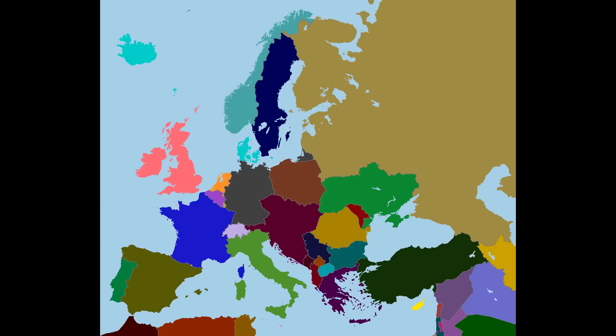Moving south to the Mediterranean: Malta belongs to the British, as does Cyprus — which is the reason they still have British military bases there today. Egypt is also British, although there's only a tiny fragment of it visible on the map. Another change in the Mediterranean is in Greece: the Dodecanese islands to the southeast actually belong to Italy at this time. In North Africa, Tunisia is a French colony, as is Algeria. The northern part of Morocco is part of Spain, and the rest of France.